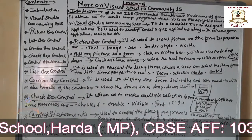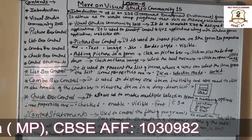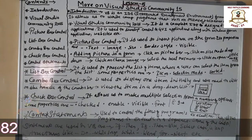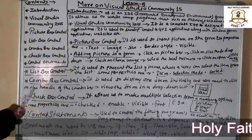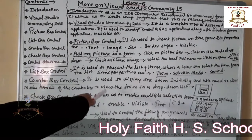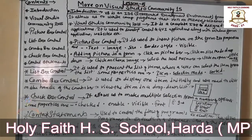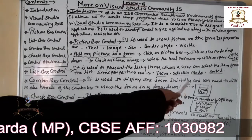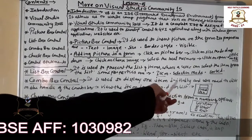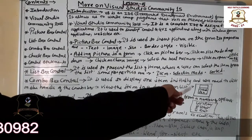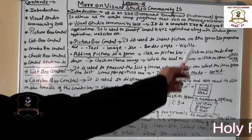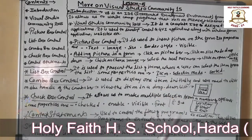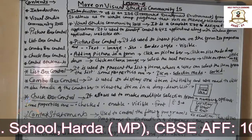The Combo Box control is used to display one item initially, and the user needs to click on the handle of the combo box to view items in a drop-down list. For example, it might initially show 'Cookies' or 'Pen' as the first item, with the remaining list appearing below when expanded.